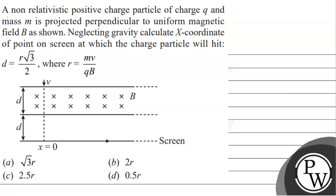Let's read this question. A non-relativistic positive charge particle of charge Q and mass M is projected perpendicular to a uniform magnetic field B as shown. Neglecting gravity, calculate the x-coordinate of the point on screen at which the charged particle will hit. D is equal to R root 3 by 2, where R equals MV upon QB. Options are: root 3 R, 2R, 2.5R, 0.5R. We have to choose the correct option.